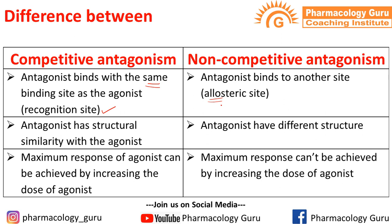The second difference: in competitive antagonism, the agonist and antagonist have structural similarity, which is why they compete with each other for binding to the same site. In non-competitive antagonism, the antagonist has a different structure from the agonist, which is why they do not compete with each other.